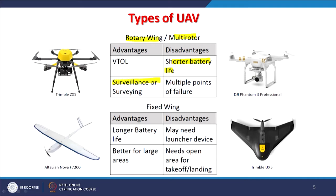Rotary wing UAVs can be used for surveillance, surveying, and remote sensing. Whereas fixed wing UAVs generally have longer battery life but require to be launched. Fixed wing is also better for large area coverage but needs open areas for takeoff and landing. So there are limitations, and the most popular nowadays are the rotary wing or multi-rotor UAVs.